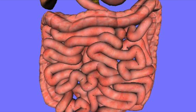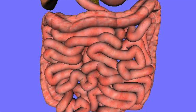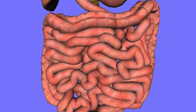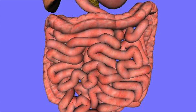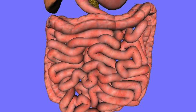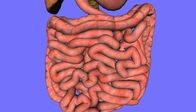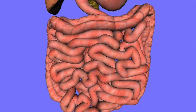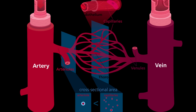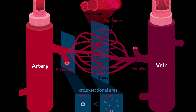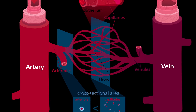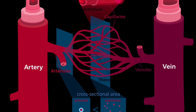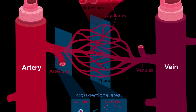For digestive molecules to reach your cells, they must move from the small intestine into the bloodstream, and they do this by a combination of diffusion and active transport. The digestive food molecules are small enough to pass freely through the walls of the small intestine into the blood vessels, and they move into the blood by diffusion down a steep concentration gradient.